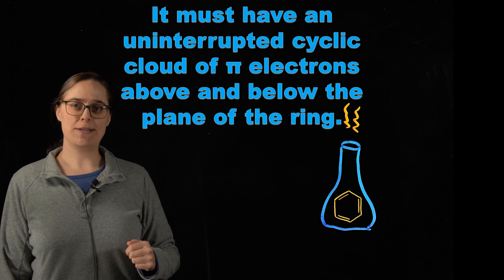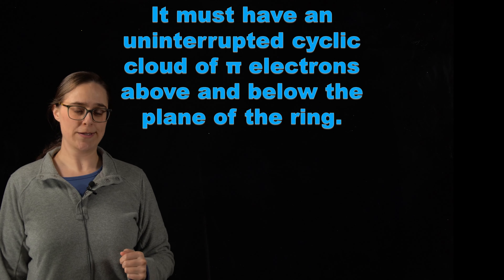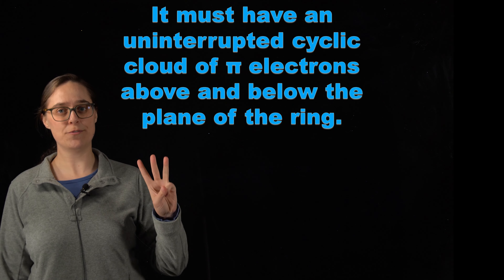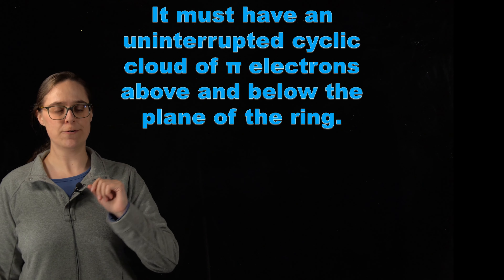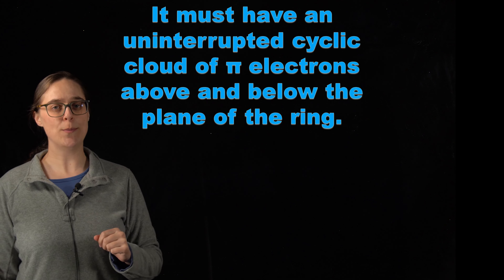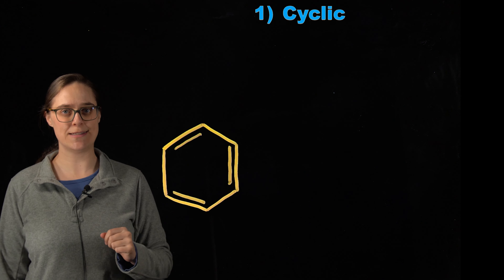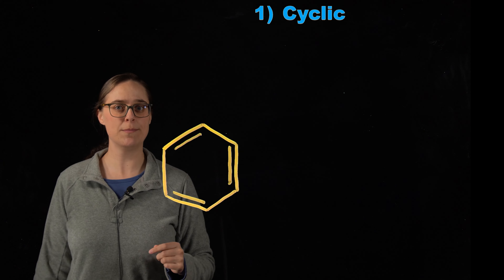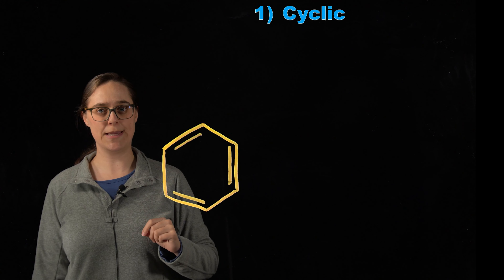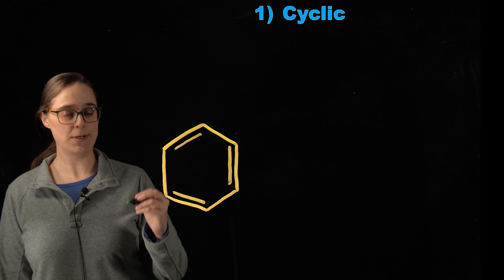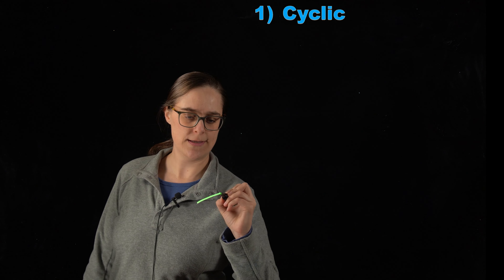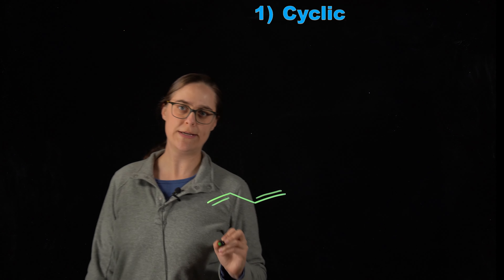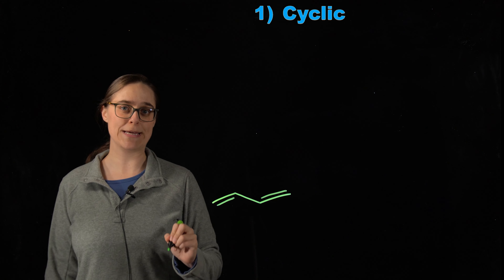The goal of this video is to enable you to look at a molecule and decide if it's aromatic. I'm going to translate this definition to a list of three criteria. Our first criterion is that an aromatic molecule must be cyclic. Benzene is cyclic because somewhere in the molecule there are atoms that make a ring. An example of a molecule that is not cyclic is 1,3-butadiene — nowhere in this molecule do you see a ring of atoms.